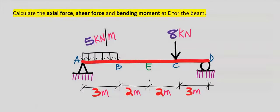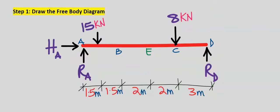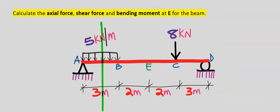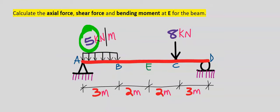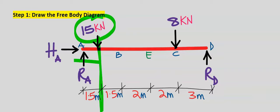To solve this problem, this is the pin support and this is the roller support. Step number one: draw the free body diagram. The pin support has a horizontal force and a vertical force acting at that point, while a roller support has only one vertical force. Also, at the middle of the 3 meters, the uniformly distributed load between A and B will become 5 multiplied by 3, which is 15 kilonewtons, added at the center — 1.5 meters from A and 1.5 meters to point B.